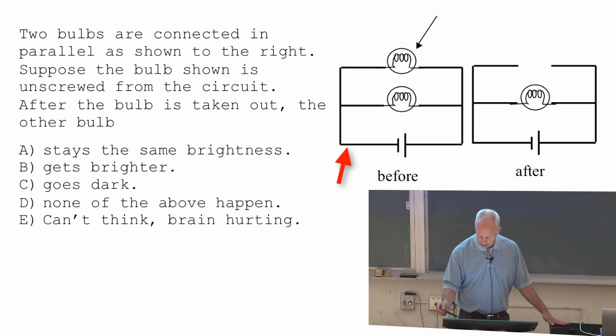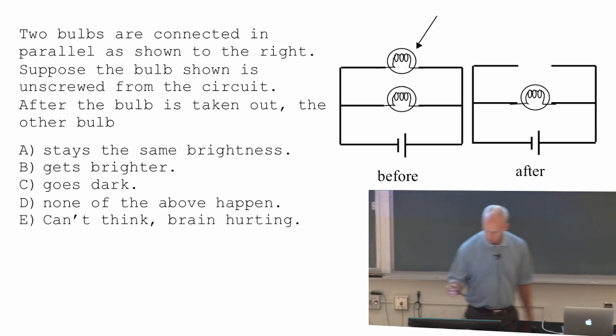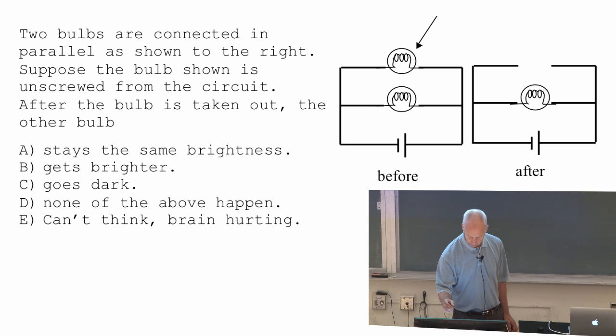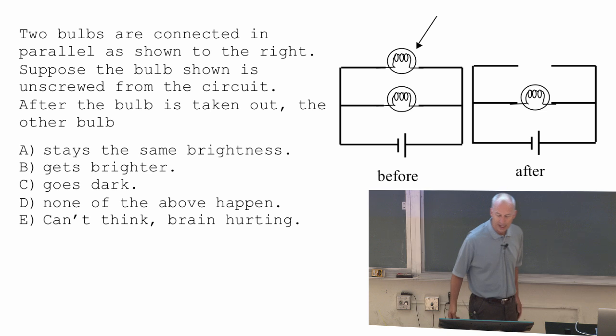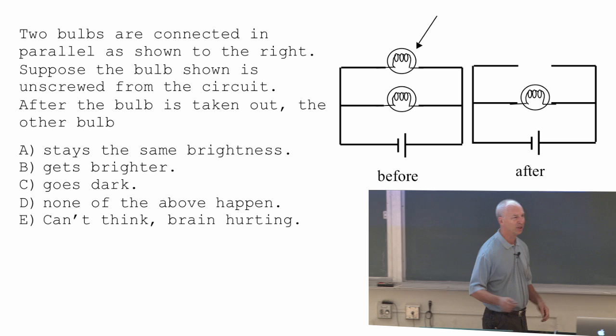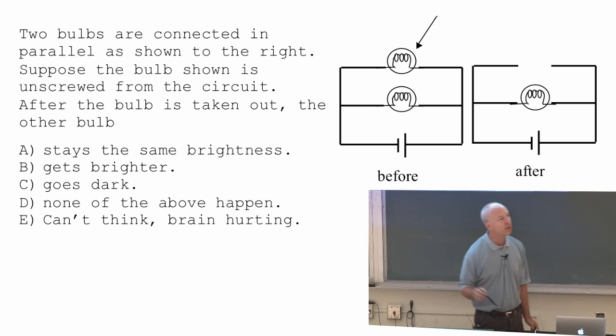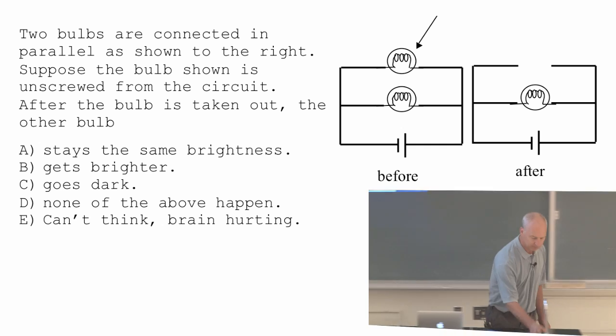And my question for you is, what happens if I take out one bulb? So, there's a few choices for what happens to the other bulb. The bulb I take out, of course, is going to be dark, because it's no longer connected to anything. But what happens to the one that's left behind? Talk about it all you want. Talk about it.